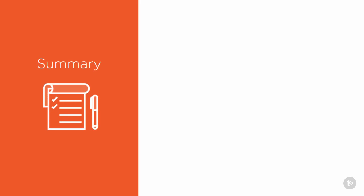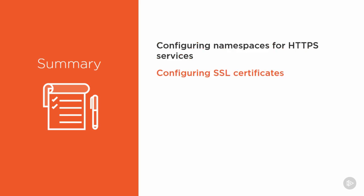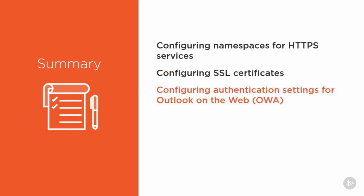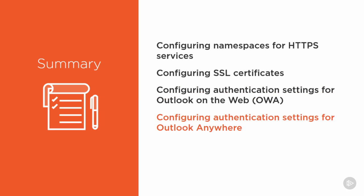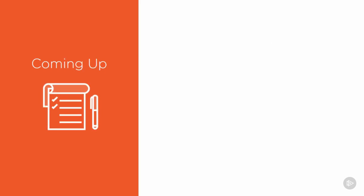That brings us to the end of this module. We looked at how to configure namespaces for HTTPS services on Exchange servers, how to configure SSL certificates, authentication settings for Outlook on the Web, and how to configure Outlook Anywhere for different authentication methods. Finally, we went through the reasons and steps for configuring Kerberos authentication with Exchange. Let's move on to the next module, which will cover load balancing for Exchange 2016 client access.